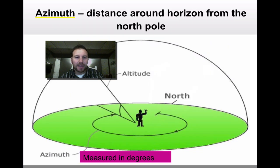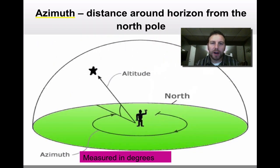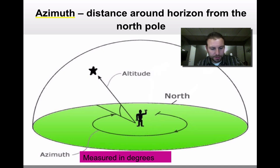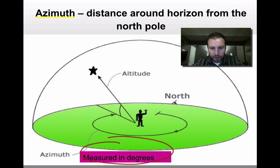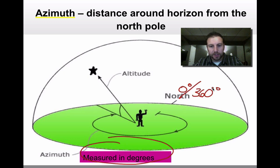Then we have our azimuth direction. Our azimuth direction is our distance around the horizon from the north, also measured in degrees. As we see on the bottom, north is zero degrees or 360 degrees.